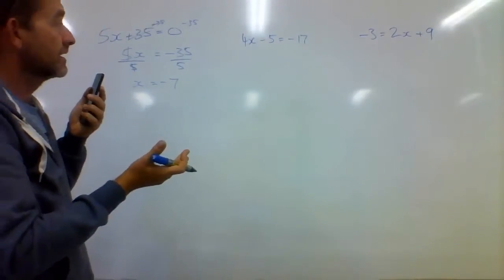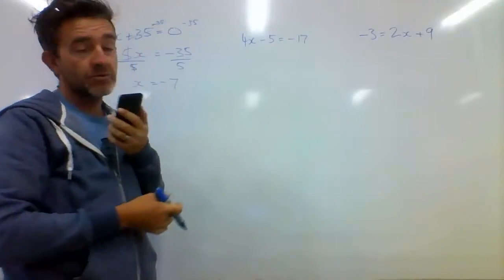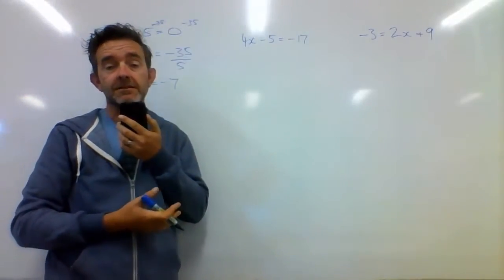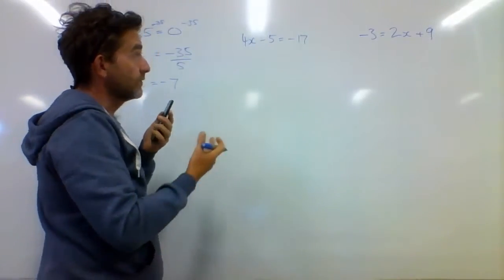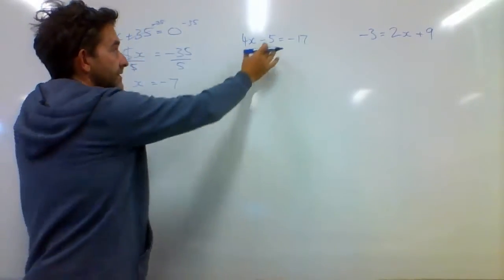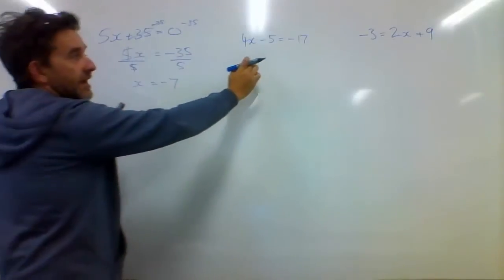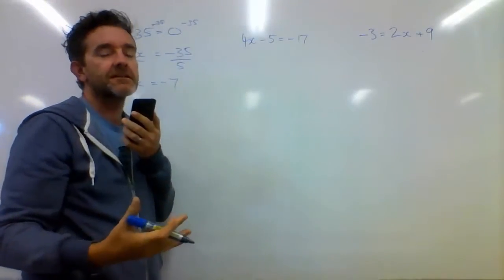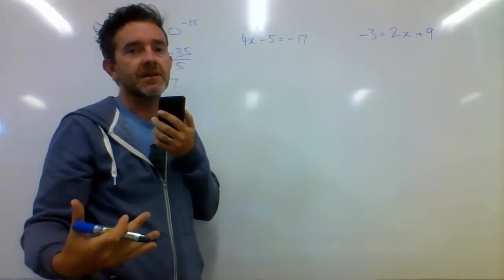Looking at the second question, the second question's got a few more negatives in it, so let's have a look at that as another example. We've got 4x take 5 being equal to negative 17. Similar structure to over here. I'm going to get rid of that negative 5, because that's happening to the x after the multiplication, if we think about BODMAS.